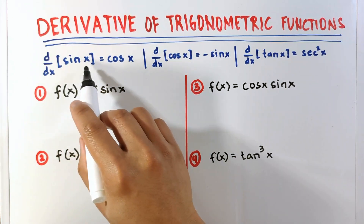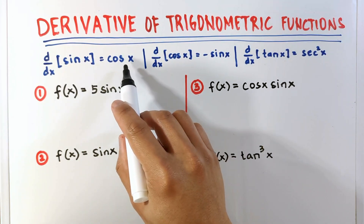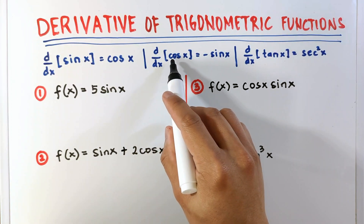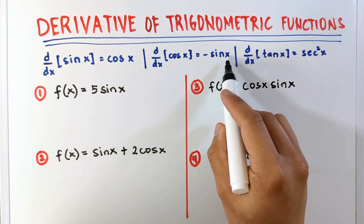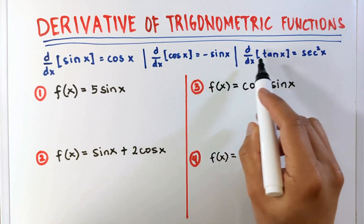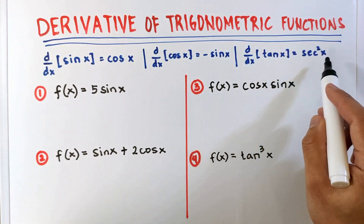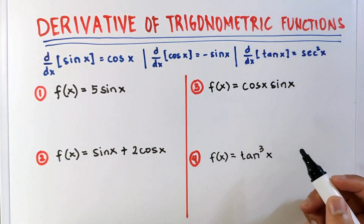First, we have sin x. The derivative is cosine x. The derivative of cosine x is negative sin x. The derivative of tangent x is secant squared x.